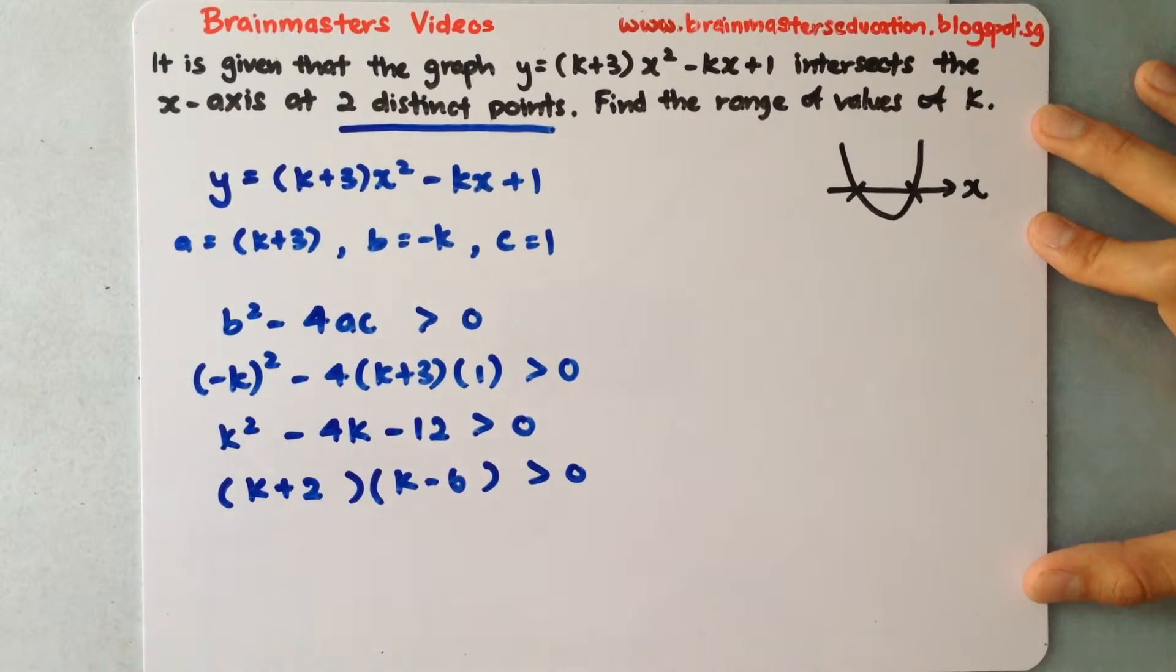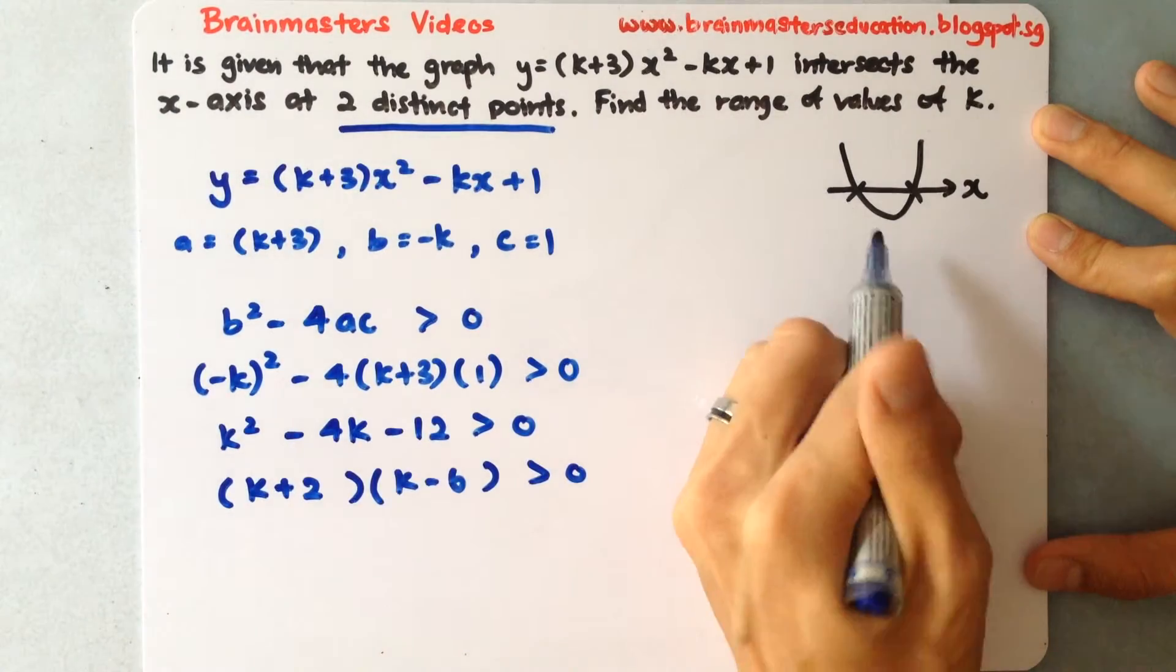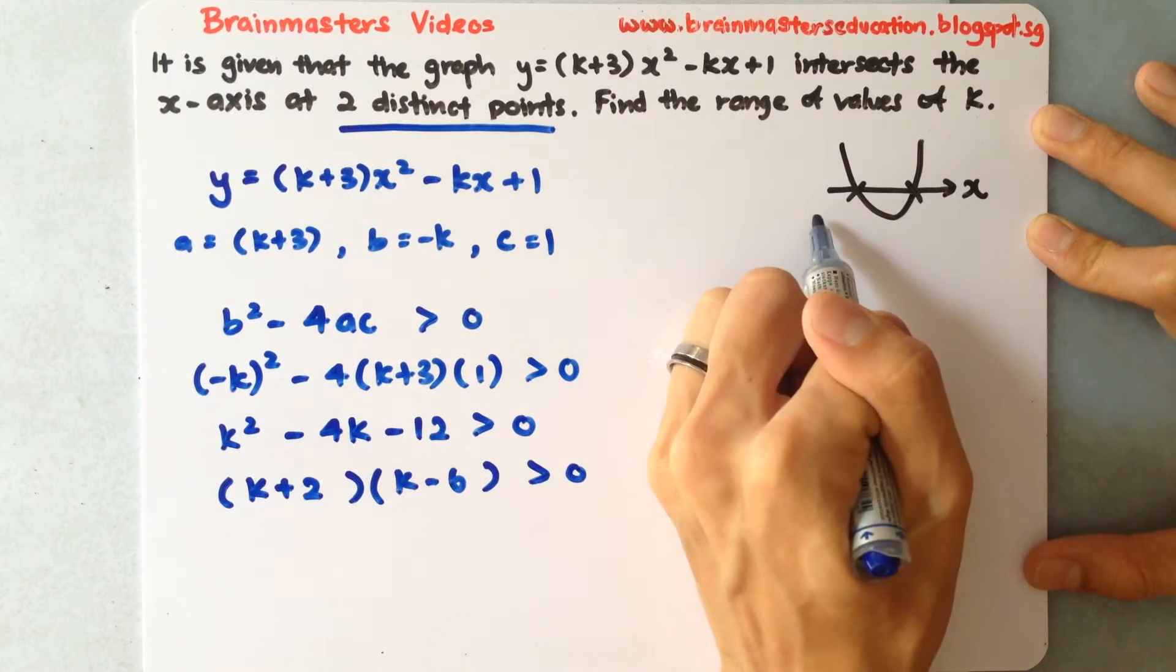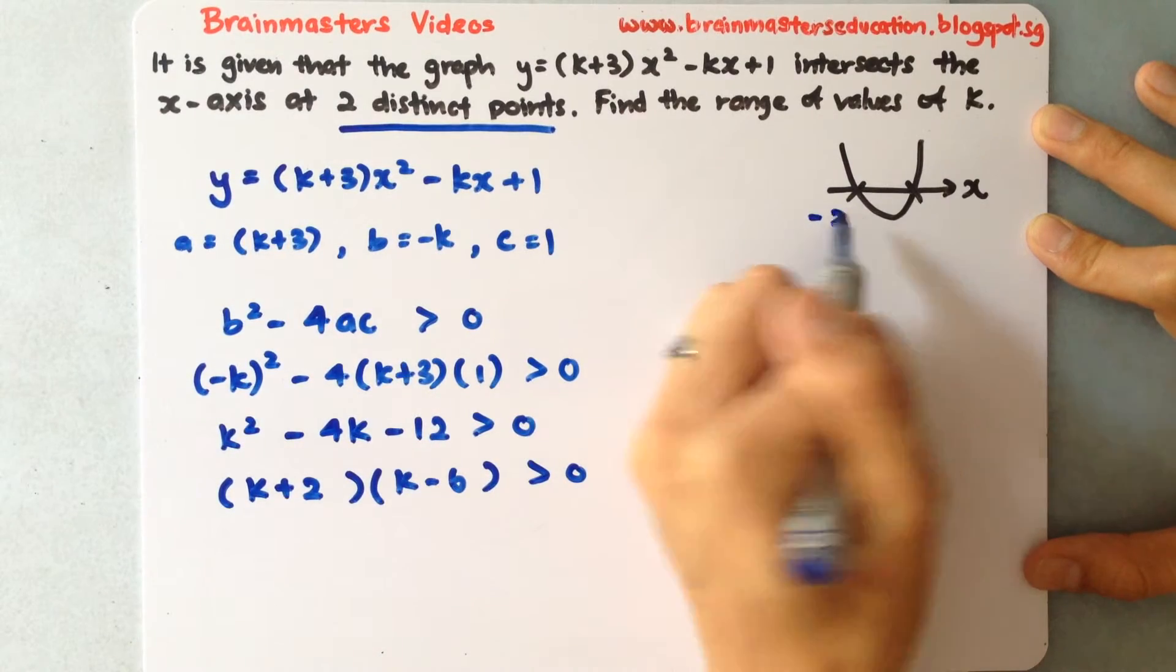At this point this one seems like our inequalities in e-math, but for a-math it's slightly different. What we know here is k, the points will be k equals to negative 2 and k equals to 6 if you solve it. So I'll use this graph here to tell me that this is negative 2 and this is 6.